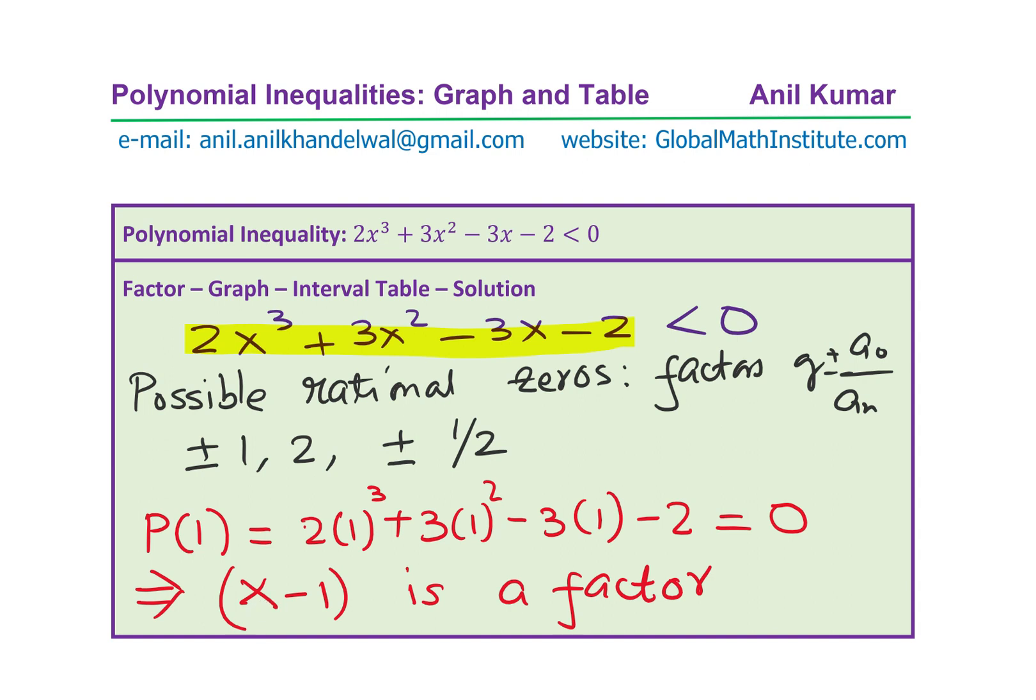Once you know that x - 1 is a factor, we can actually divide the given polynomial with x - 1 and then get the other factors. You get a quadratic equation, which you can easily factor. So let's do that.